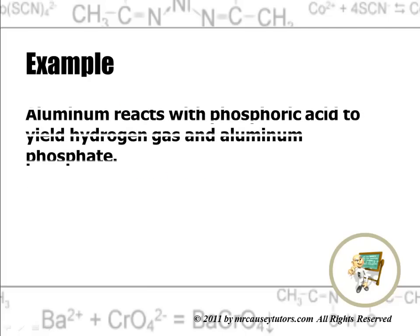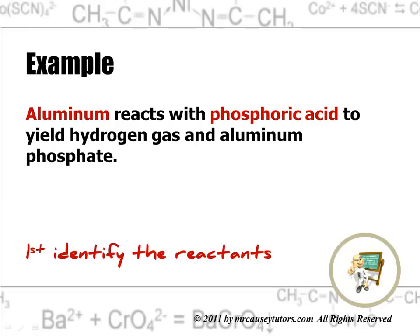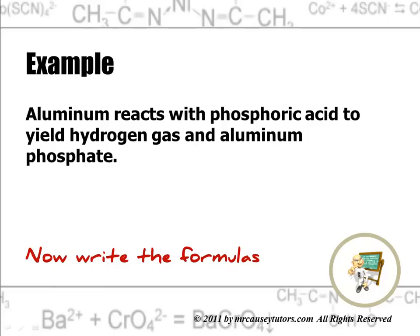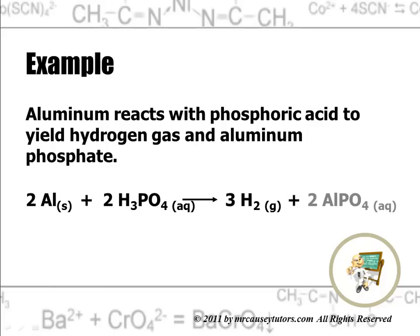Let's look at an example. Aluminum reacts with phosphoric acid to yield hydrogen gas and aluminum phosphate. Watch this very carefully — and if you need to, stop and rewind to look at it again; that's the beauty of video. First, identify the reactants. Second, identify the products. Now write the formulas. There we go — voila.